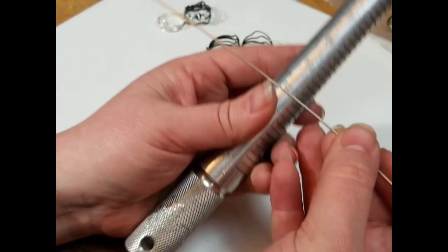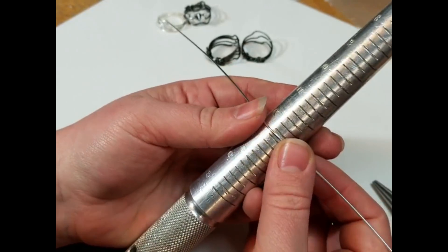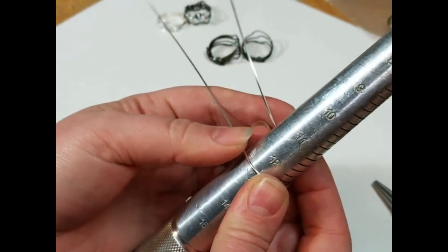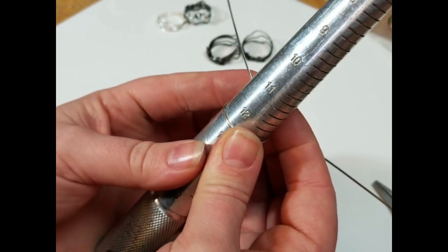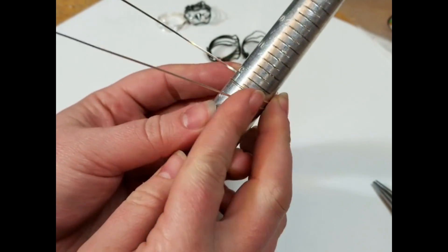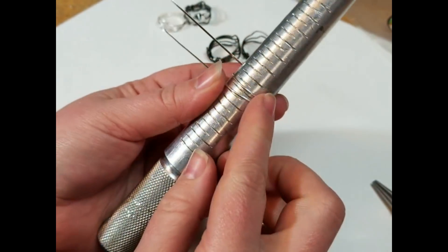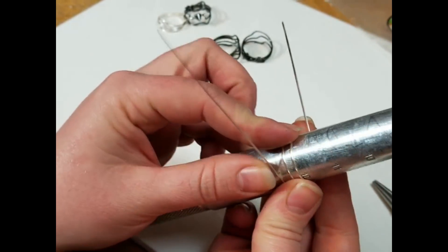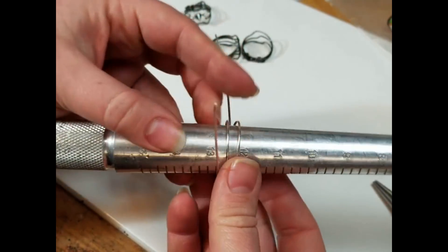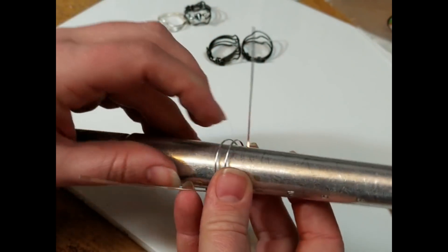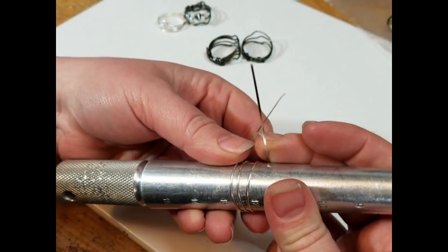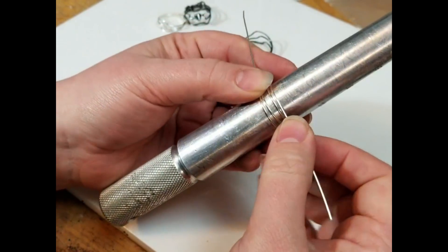So now that that's nice and straight and kink-free, I'm going to come through. And I always start to make the ring about a size or two larger than what I think I'll need it to be because it compresses down whenever you put those, or rather contracts down when you put those wiggles in it. And so I'm just wrapping it around three times.